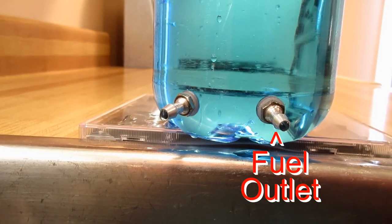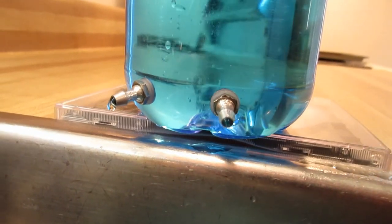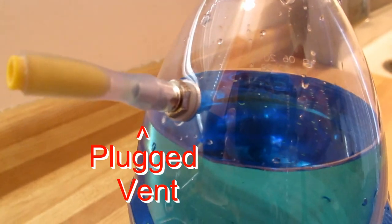With uniflow venting, the tank has a fuel outlet at the bottom just like the standard vented tank. But the uniflow air vent inlet is also at the bottom. The vent at the top is plugged.